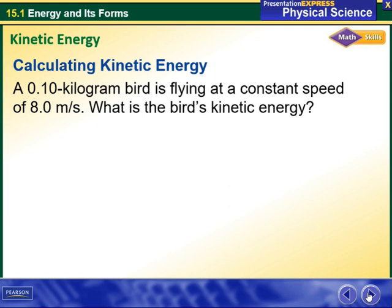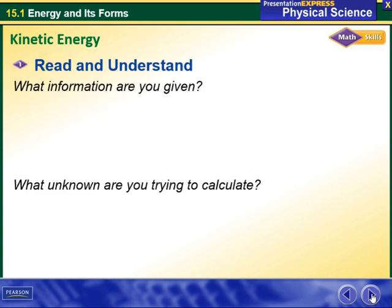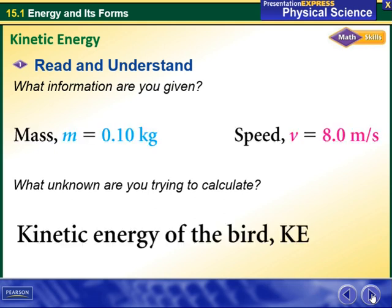Let's take this example of calculating kinetic energy. A 10-kilogram bird is flying at a constant speed of 8 meters per second. What is the bird's kinetic energy? The information given is the mass, which is 10 kilograms, and the speed (v), which is 8 meters per second. The unknown we are trying to calculate is the kinetic energy of the bird, denoted as KE.